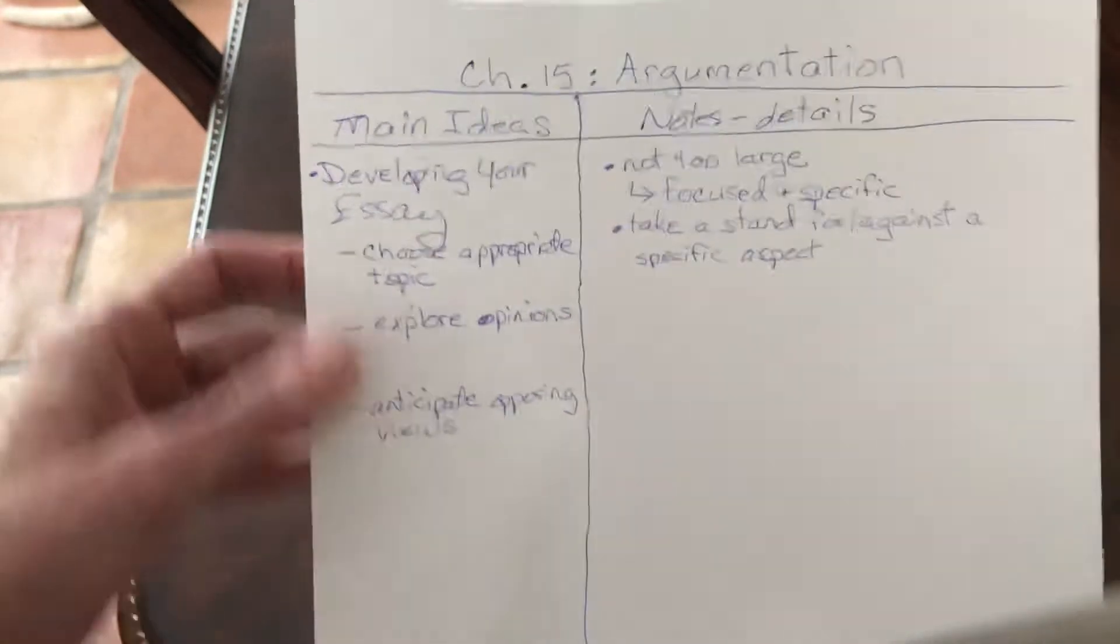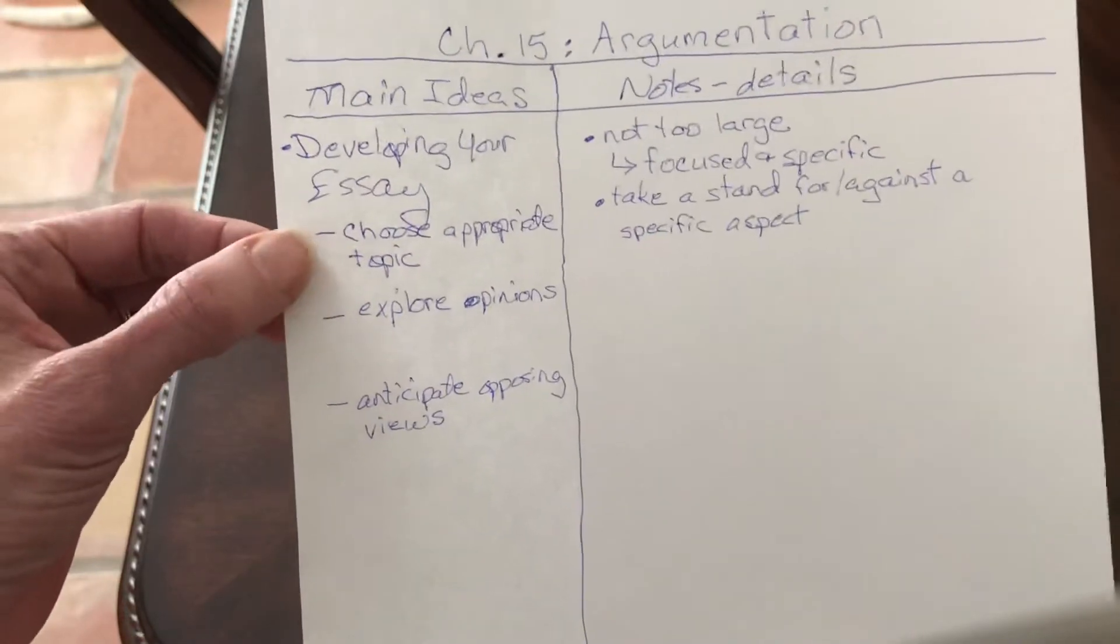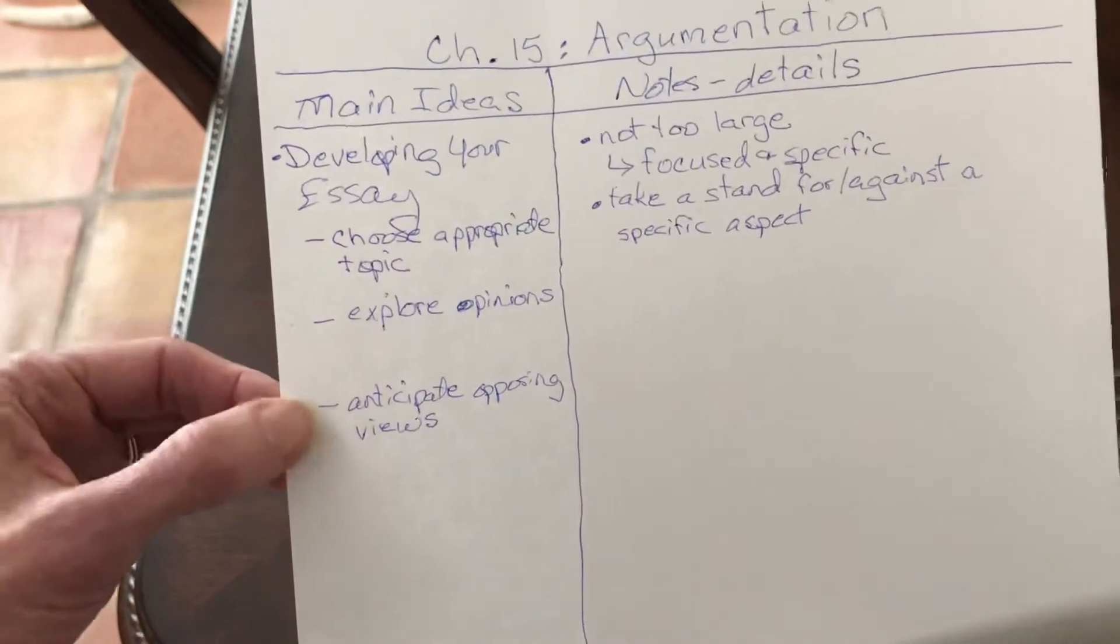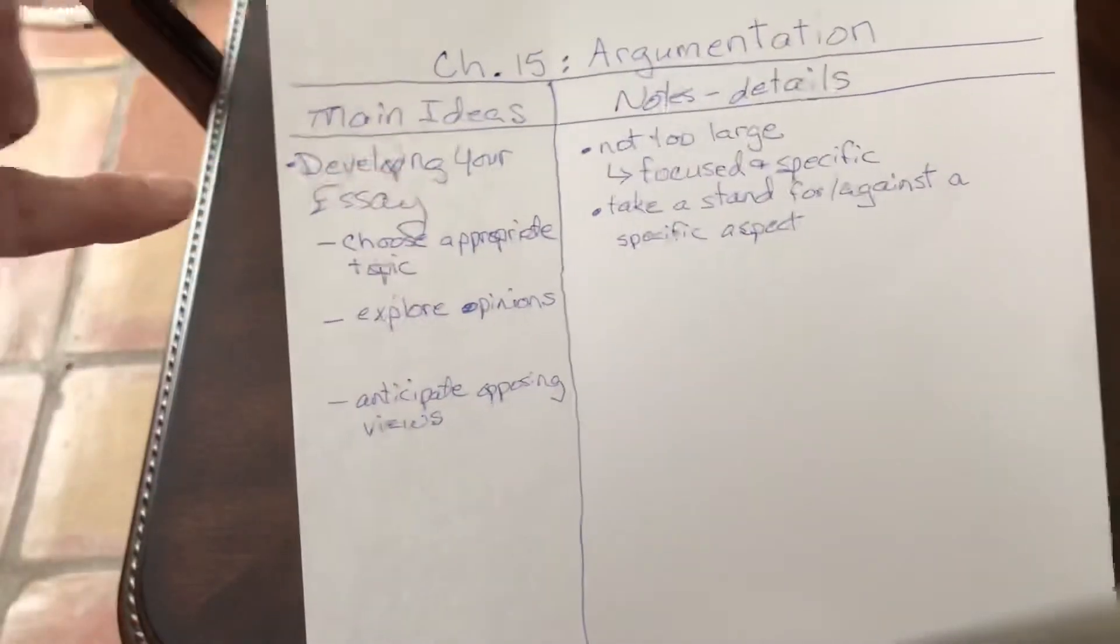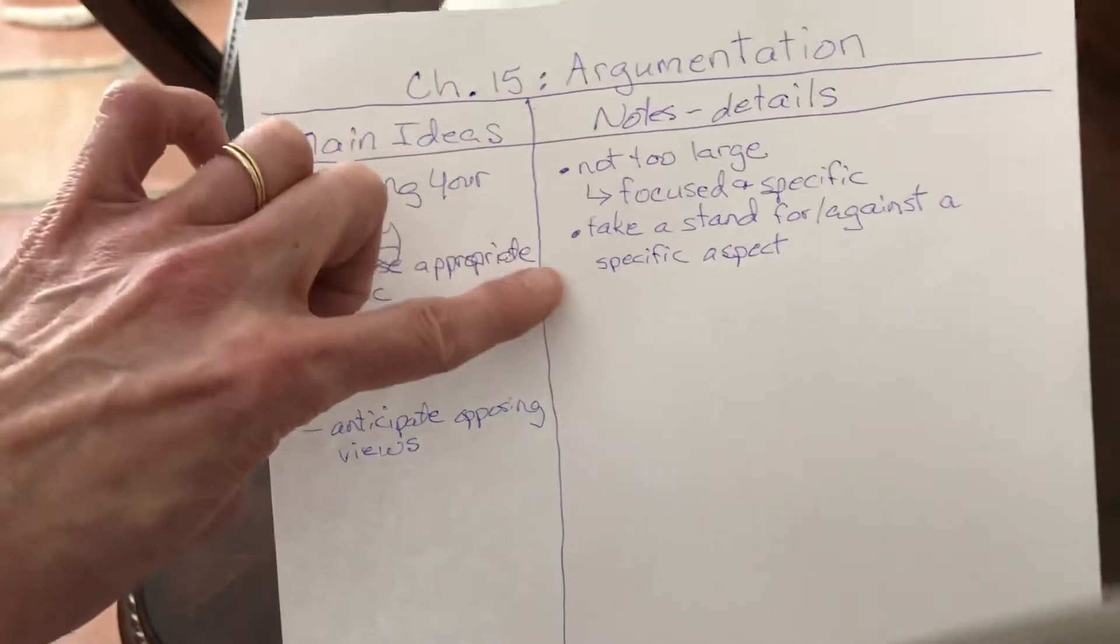I've added some of the subheadings underneath 'developing your essay' and see how they're all introduced. They all have dashes to separate them. I also like using bullet points. I've got bullet points that separate some of my details.